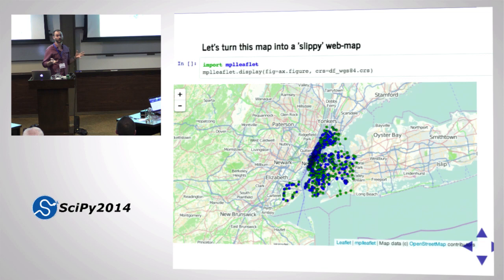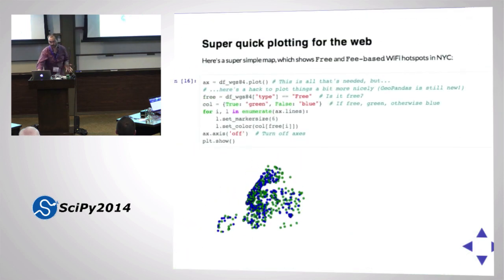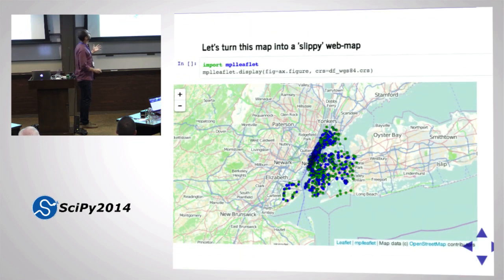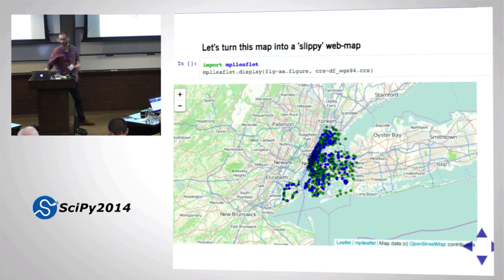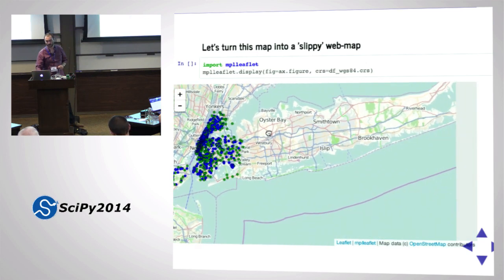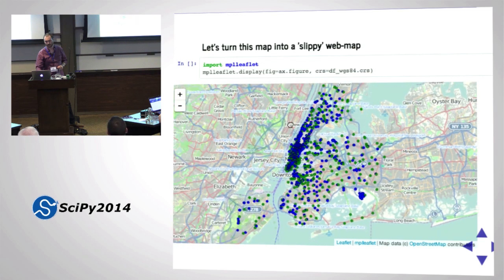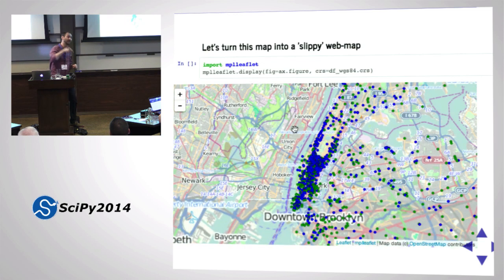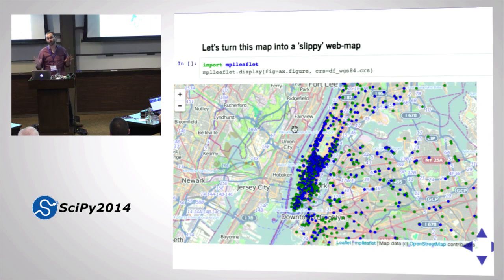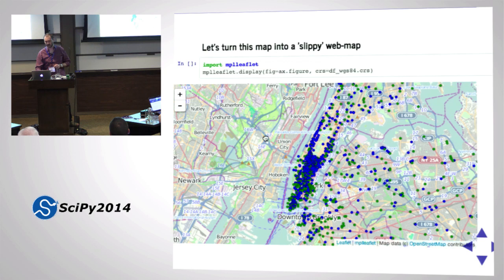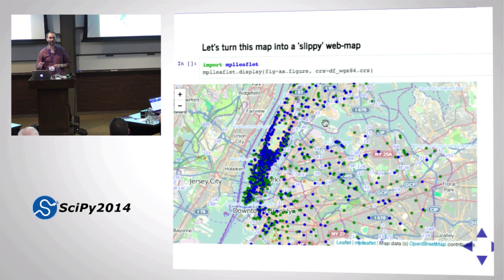Now say I want to make a web map - a slippy map - of that plot. Just: import mpl_leaflet, then mpl_leaflet.display(figure, crs='EPSG:4326'). And you've got a slippy map. It's not just a static map - it's a map you can zoom on, and it embeds right in your IPython notebook. This will impress your friends. In future versions you'll be able to click on points for their attributes, but for now it's already an interactive web map in your notebook.